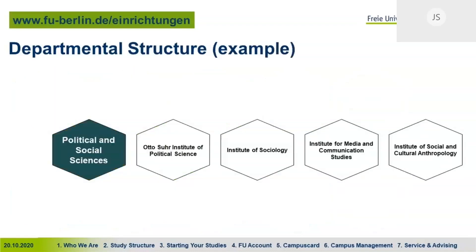Each department is made up of different institutes. As an example, the Political and Social Sciences department consists of the Otto-Suhr Institute of Political Science, the Institute of Sociology, the Institute of Media and Communication Studies, and the Institute of Social and Cultural Anthropology. So if you study one of those four programs, you'll be in that department.